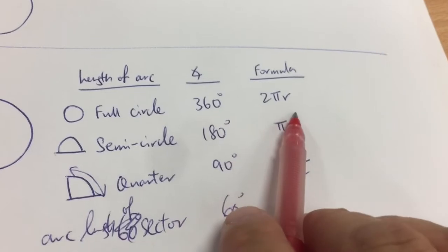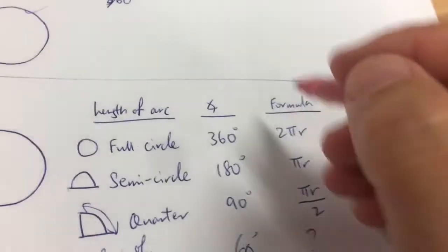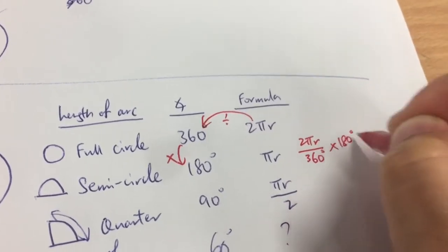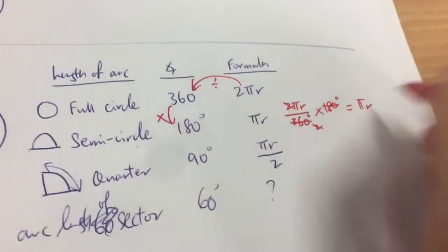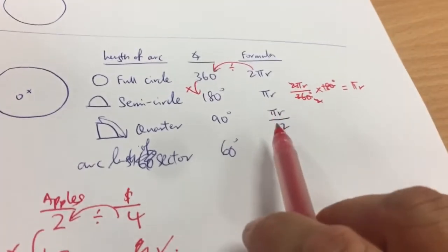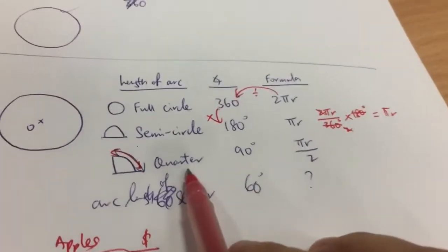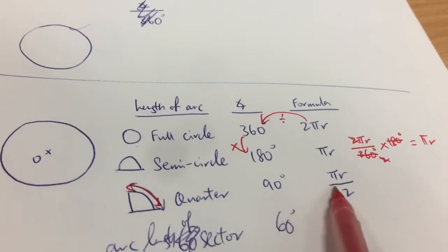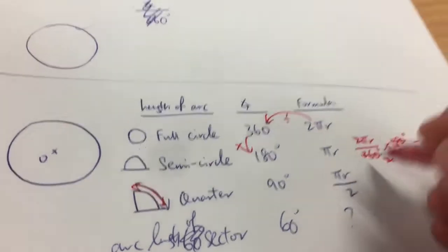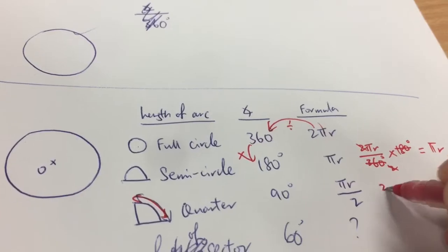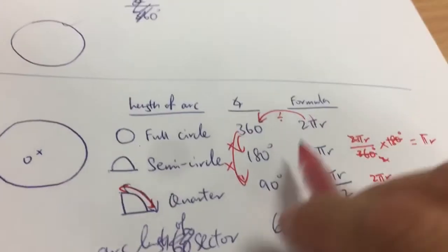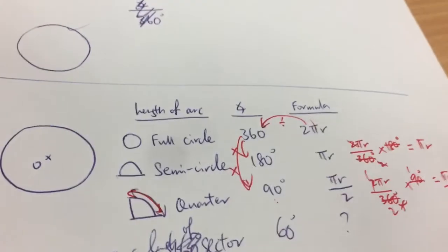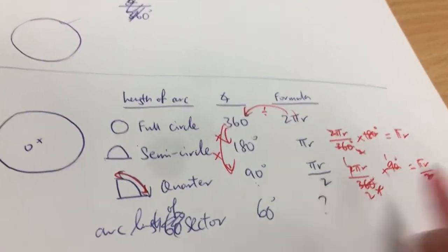So for a full circle, 360 degrees gives you 2πr. If you want half a circle — 180 degrees — what's the formula? You do 2πr divided by 360 times 180, and you realize you actually get πr. For a quarter circle — 90 degrees — it's 2πr divided by 360 times 90, which gives you πr over 2. So you can do this same step for 60 degrees: 2πr divided by 360 times 60, which gives πr over 3.